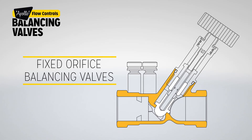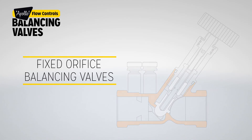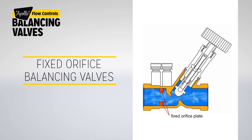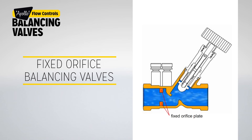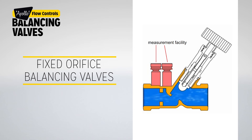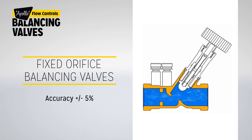Fixed orifice balancing valves: fixed orifice double regulating valves can be identified by a fixed orifice measuring device cast into the internal body of the valve. The CVS of these valves is fixed. The pressure differential is called a measurement signal, and the flow rate through this valve is calculated from that measurement signal. The accuracy of this type of valve is typically plus or minus 5 percent, dependent on the opening position.